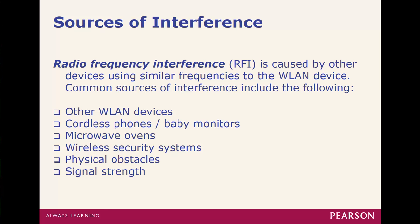Let's look at interference. What can cause it? RFI — radio frequency interference — can be caused by other devices on similar frequencies or channels. This includes cordless phones, baby monitors, microwave ovens, security systems, wireless cameras, physical obstacles like walls and ceilings, people, or just really bad signal strength.